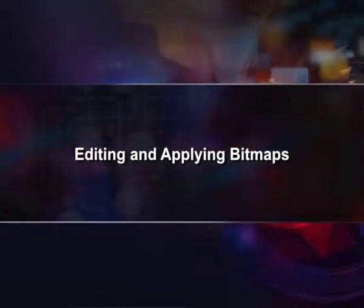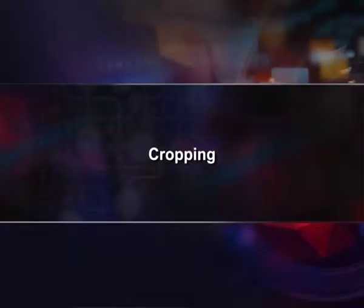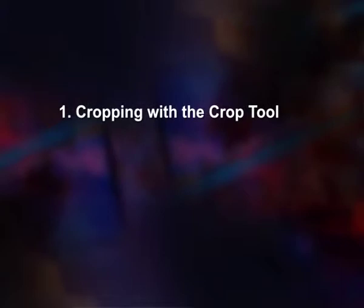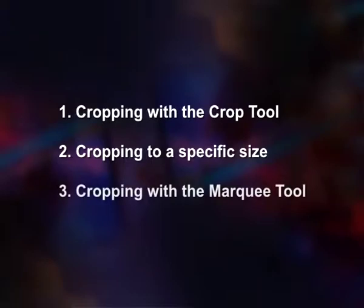Editing and Applying Bitmaps. Basic bitmap editing methods are cropping, resizing, correcting, and sharpening or blurring images. Cropping is one of the most basic editing techniques that can improve images. It helps to bring out the most important features and focus the viewer's attention. Cropping also allows you to make images into a standard photo size. There are several ways to crop images in Adobe Photoshop: cropping with the crop tool, cropping to a specific size, and cropping with the marquee tool.